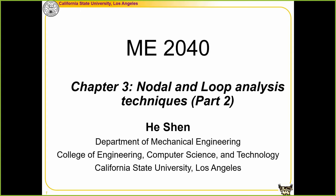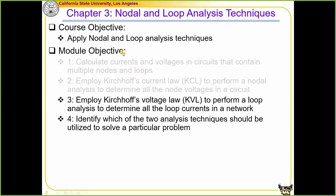Today we're going to learn loop analysis. The module objective is to employ KVL to perform a loop analysis to determine all loop currents in a network. After you get the loop currents, you can get everything from a circuit. It's very similar to node analysis, where you can get node voltages and solve everything. Here, if you can determine all loop currents, you can solve everything in the circuit. We'll also help you find which will be the easier method to choose.